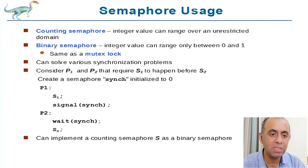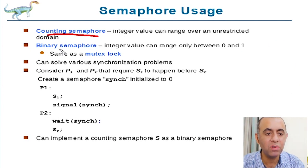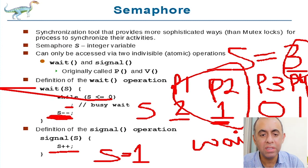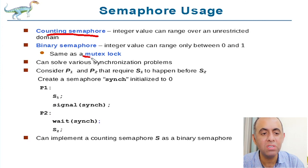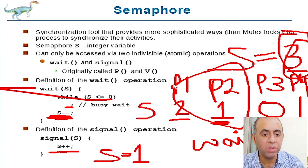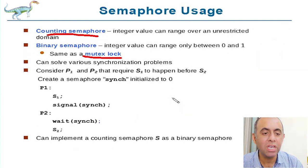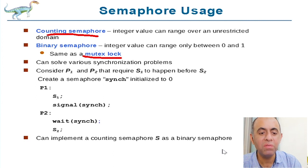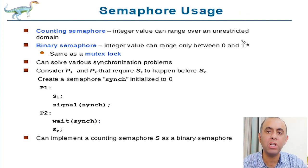These are called counting semaphores. If the initial value is 1, it is called a binary semaphore, which is just like a mutex lock. But if the initial value is greater than 1 — as in this case, 3 — it is called a counting semaphore. Counting semaphores can be used for situations where you have multiple resources and want to allow multiple processes to go into their critical sections.